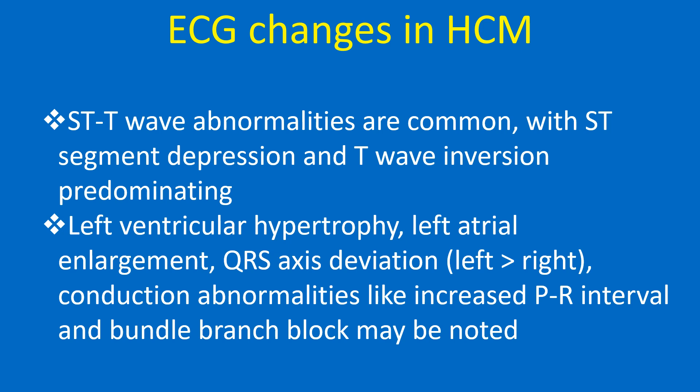ECG changes in HCM: ST-T wave abnormalities are common, with ST segment depression and T wave inversion predominating. Left ventricular hypertrophy, left atrial enlargement, QRS axis deviation (left more than right), and conduction abnormalities like increased PR interval and bundle branch block may be noted.